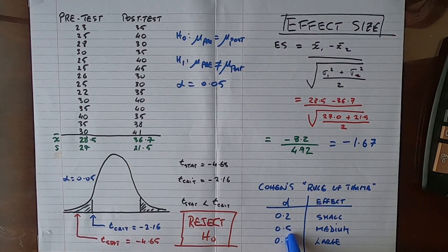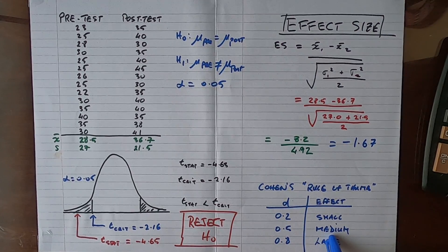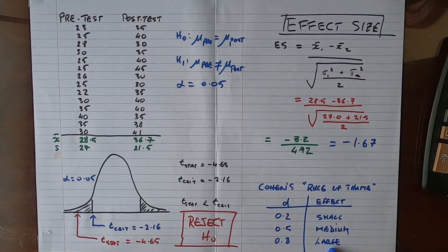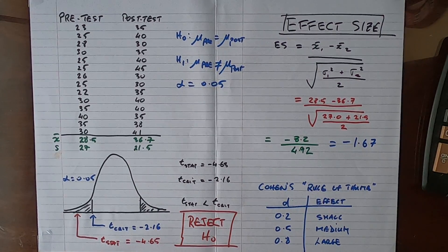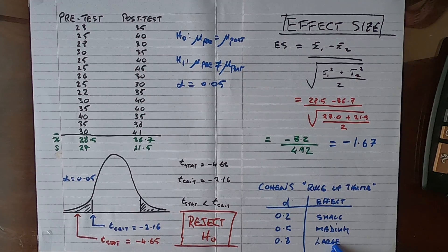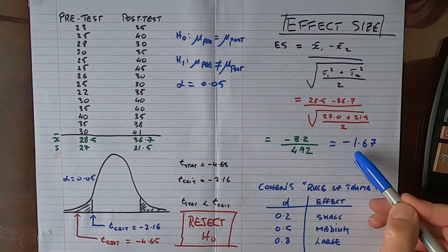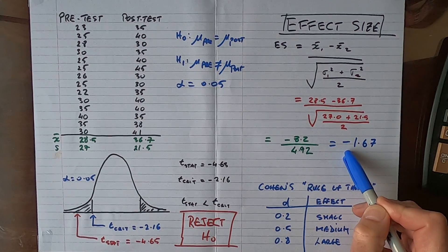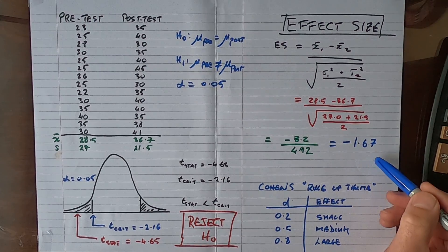Effect sizes of 0.5 are usually regarded as a medium effect, and effect sizes of 0.8 or more are regarded as a large effect. In other words, you have found an effect, you have found a difference, and it is a very big difference, a meaningful difference. In our case here, we can see the effect size is minus 1.67. Ignore the minus sign; we just use the absolute value, and we can see that we have a very, very big effect here.